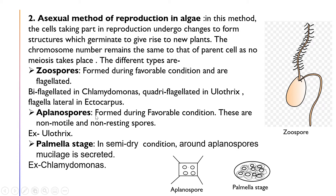The second type is aplanospores. These are formed during favorable conditions and are non-motile — they do not have flagella. They are non-resting spores, found in Ulothrix. The next method is the palmela stage: in semi-dry conditions, mucilage is secreted around the aplanospores. This is known as the palmela stage, for example in Chlamydomonas.